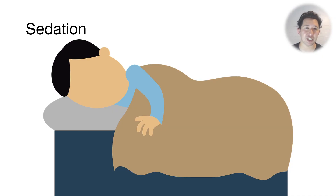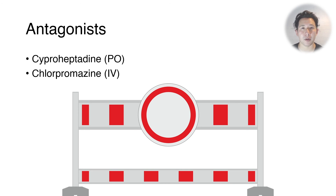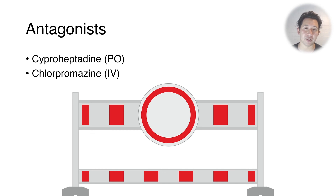The next thing to consider is sedation, which achieves two things: managing agitation and reducing heat production from movement. Benzodiazepines are the mainstay — diazepam in five to ten milligram aliquots until the patient is lightly sedated. There are also specific pharmacological antidotes in the form of serotonin antagonists: cyproheptadine, which can only be given orally and is useful in moderate toxicity, and for severe serotonin toxicity not responding to benzodiazepines, IV chlorpromazine, which also has serotonin antagonist properties.